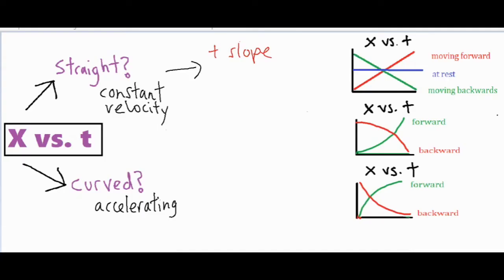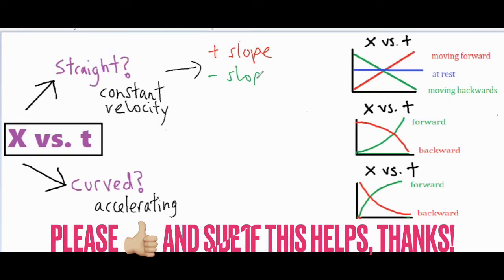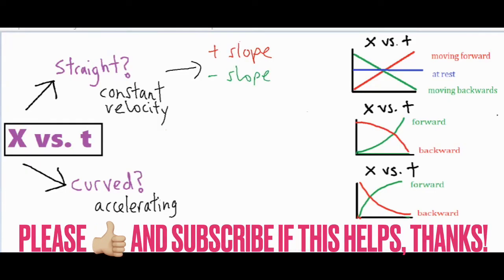If it has a positive slope and it's slanted upwards, that means that it's moving forward or away from the origin.